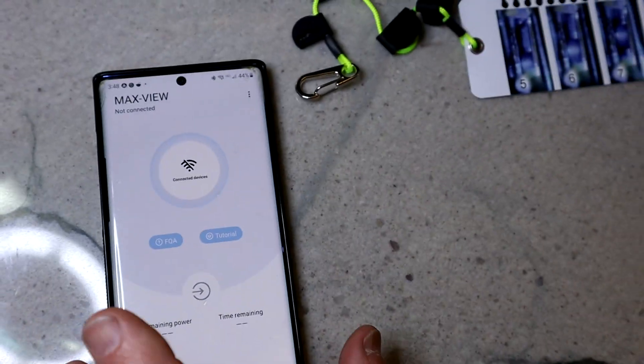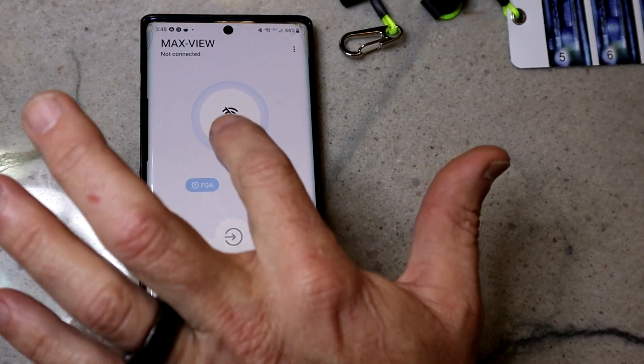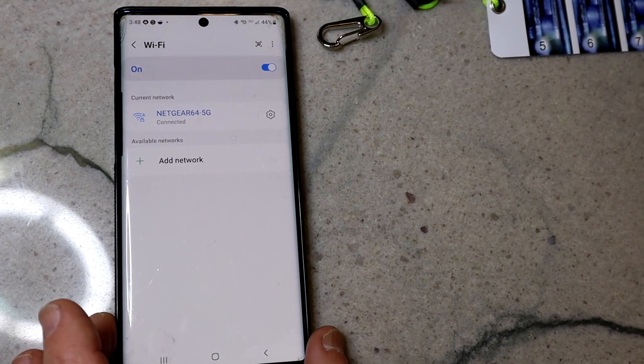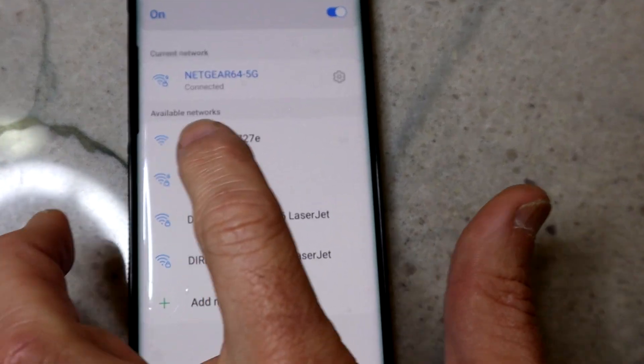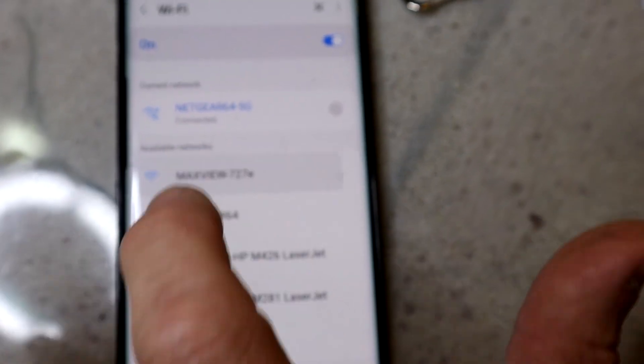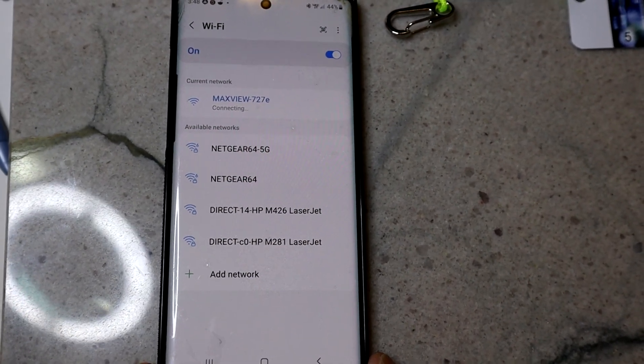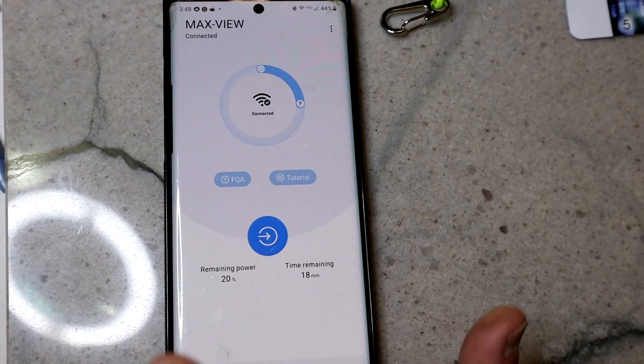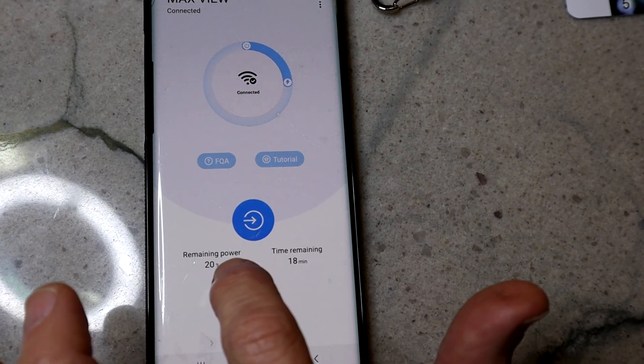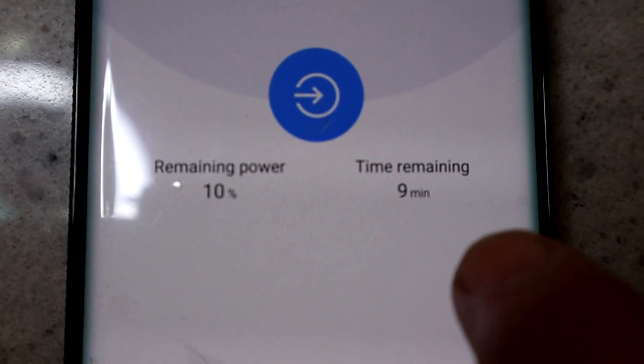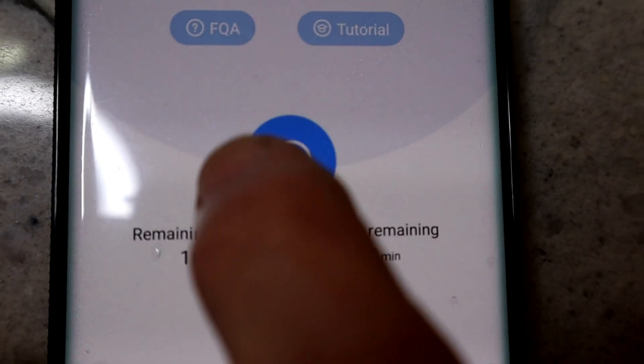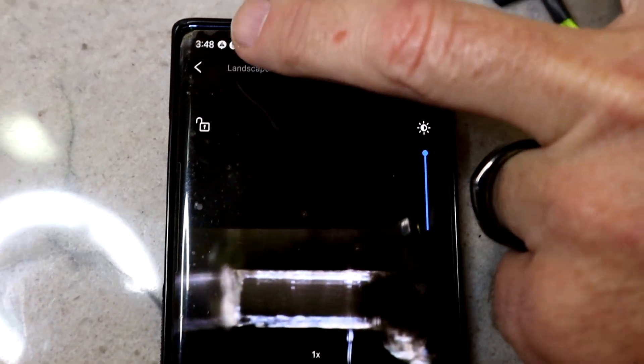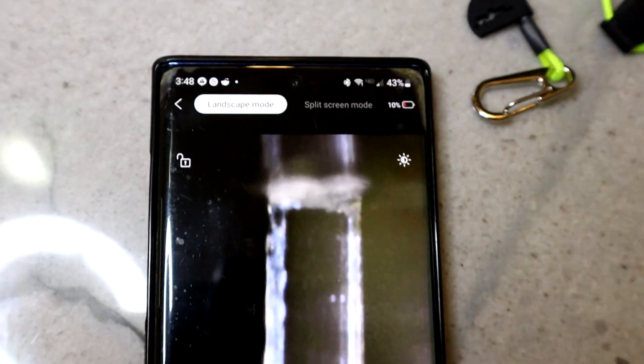You click on MaxView. The process for connecting has been simplified. You're going to hit Connected Devices. It's going to come up with all the local WiFi connections it sees. You're just going to pick your scope - it's going to be MaxView and then your serial number. Let it connect, then back out. You'll see power remaining. Right now it's at 20%, which just dropped to 10% in nine minutes. We're going to hit that to go to the scope. It always comes up in landscape view. We're going to hit the landscape view button to change it.